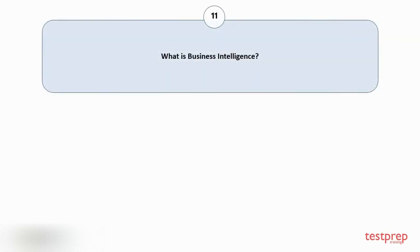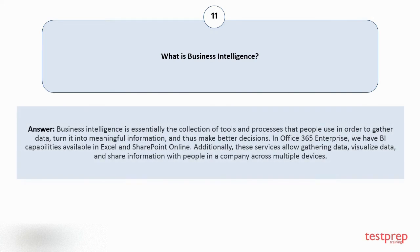Question number 11: What is Business Intelligence? Business Intelligence is essentially the collection of tools and processes that people use in order to gather data, turn it into meaningful information, and thus make better decisions. In Office 365 Enterprise, we have BI capabilities available in Excel and SharePoint Online. Additionally, these services allow gathering data, visualizing data, and sharing information with people in a company across multiple devices.